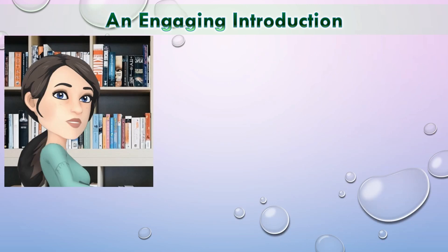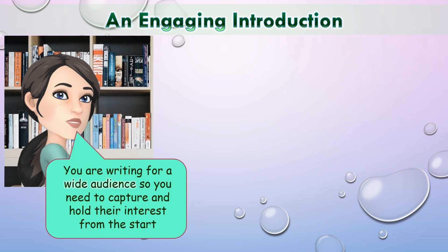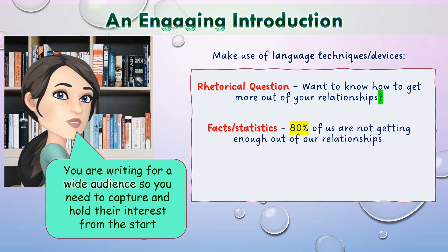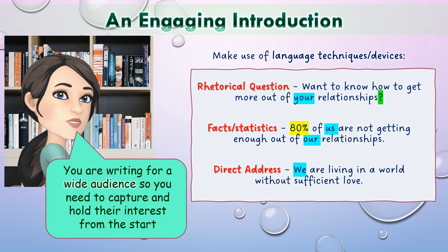Once you've got a title and you've hooked your reader, we need to think about how to keep them engaged through the introduction — our first paragraph. We need to remember we're writing for a wide audience, so we need to capture and hold their interest from the start. We can use language techniques such as a rhetorical question: 'Want to know how to get more out of your relationships?' Or we could use facts or statistics: '80% of us are not getting enough out of our relationships.' Or we could use direct address, which I would advise you use throughout the article because it creates a relationship with the reader.